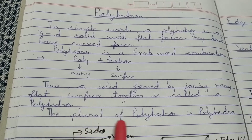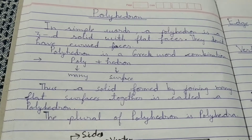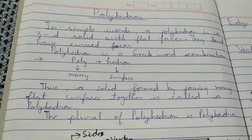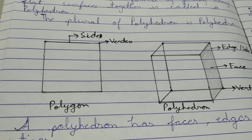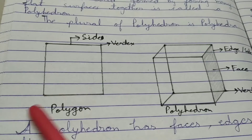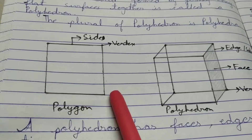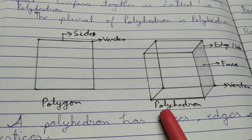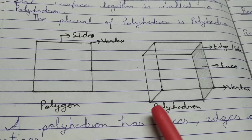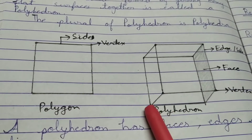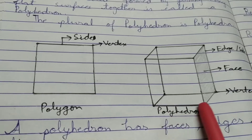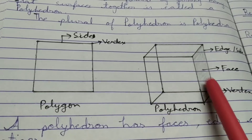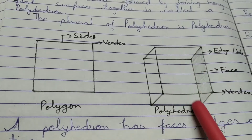The plural of polyhedron is polyhedra. A polygon is two dimensional so it has only two dimensions — length and breadth — whereas a polyhedron is a three dimensional solid, so it has three dimensions: length, breadth, and height.